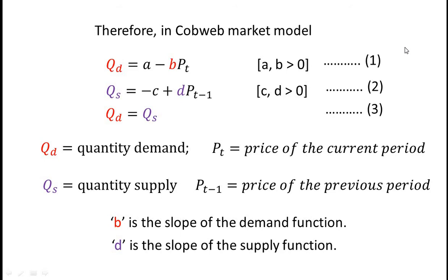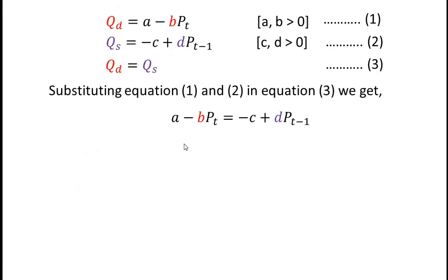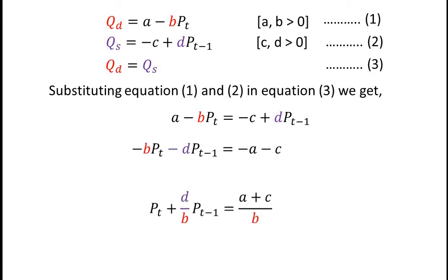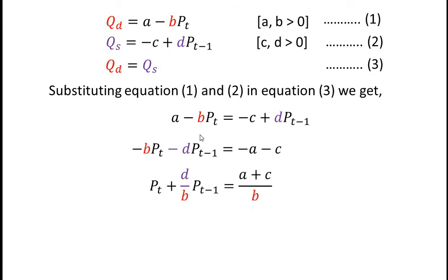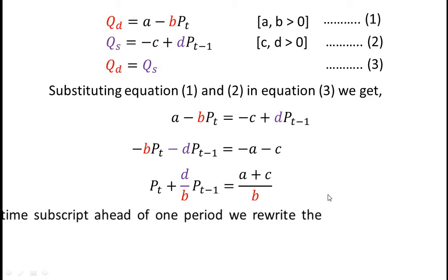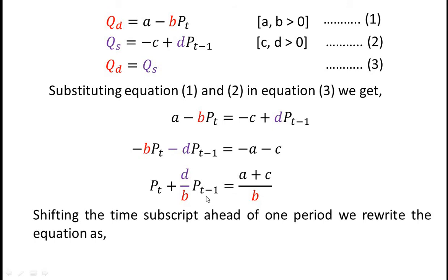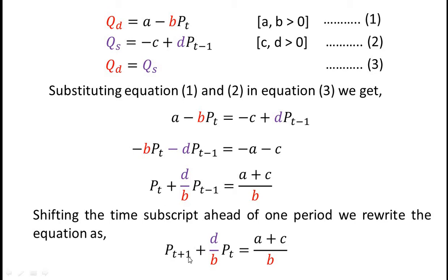Substituting equations 1 and 2 into equation 3, we get: a minus b·pt equals minus c plus d·pt−1. After simplification, we get: pt plus (d/b)·pt−1 equals (a+c)/b. Shifting the time subscript ahead one period, we rewrite the equation as: pt+1 plus (d/b)·pt equals (a+c)/b. This is equation number 4.